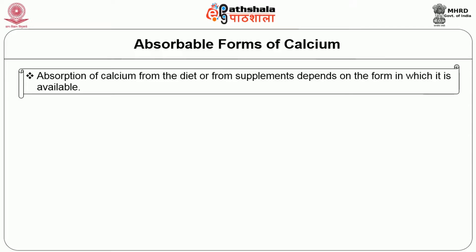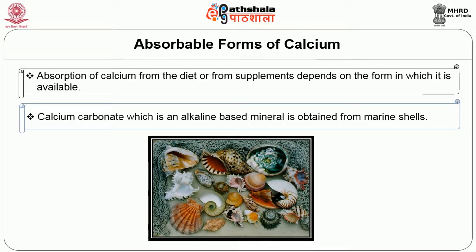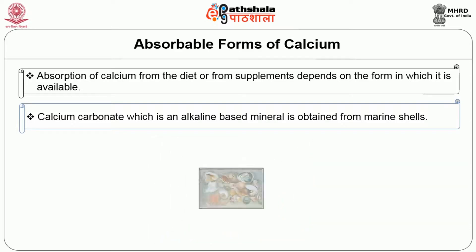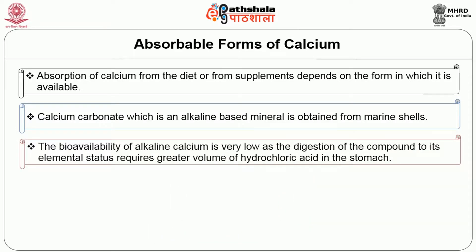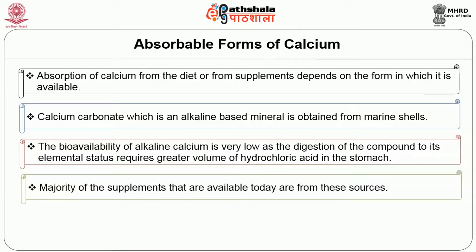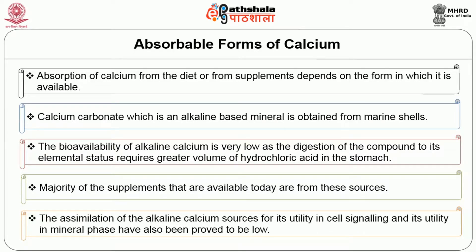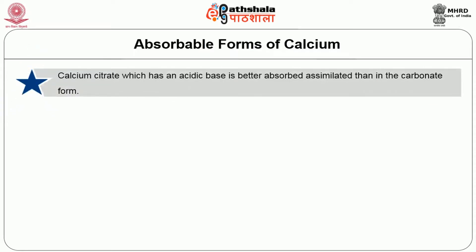Absorption of calcium from the diet or supplements depends on the form in which it is available. Calcium carbonate, which is an alkaline-based mineral, is obtained from marine shells. The bioavailability of alkaline calcium is very low as the digestion of the compound to its elemental status requires a greater volume of hydrochloric acid in the stomach. Majority of the supplements available today are from these sources. The assimilation of alkaline calcium for cell signaling and the mineral phase have also been proved to be very low. Calcium citrate has an acidic base and is better absorbed than the carbonate form.